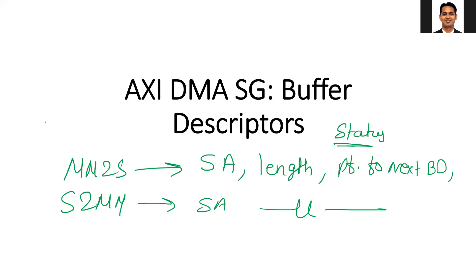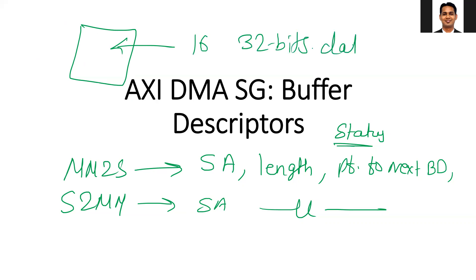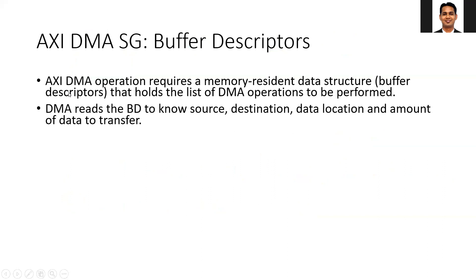The buffer descriptor will be stored in memory — it can be in block RAM, URAM, or any DDR memory. By using the DMA registers, the application has already informed the DMA where the buffer descriptors are stored. The buffer descriptor is nothing but a bunch of data; in our case, each buffer descriptor is around 16 32-bit words. AXI DMA operation requires this memory-resident data structure — the buffer descriptor — that holds the list of DMA operations to be performed. The DMA reads the buffer descriptor to know the source, destination, data location, and amount of data to be transferred.